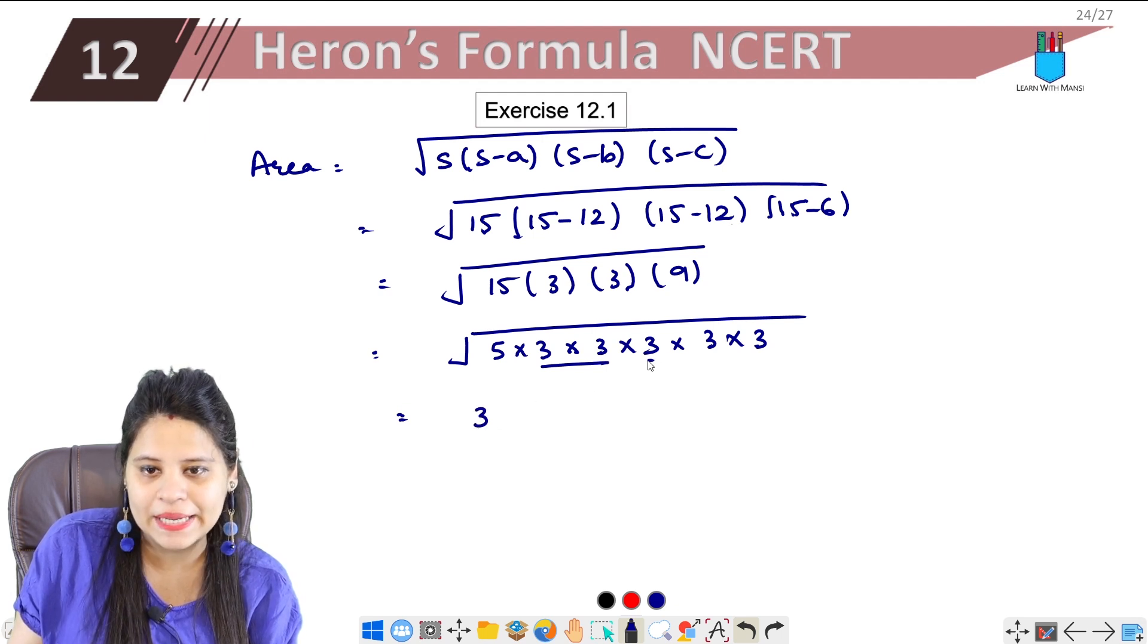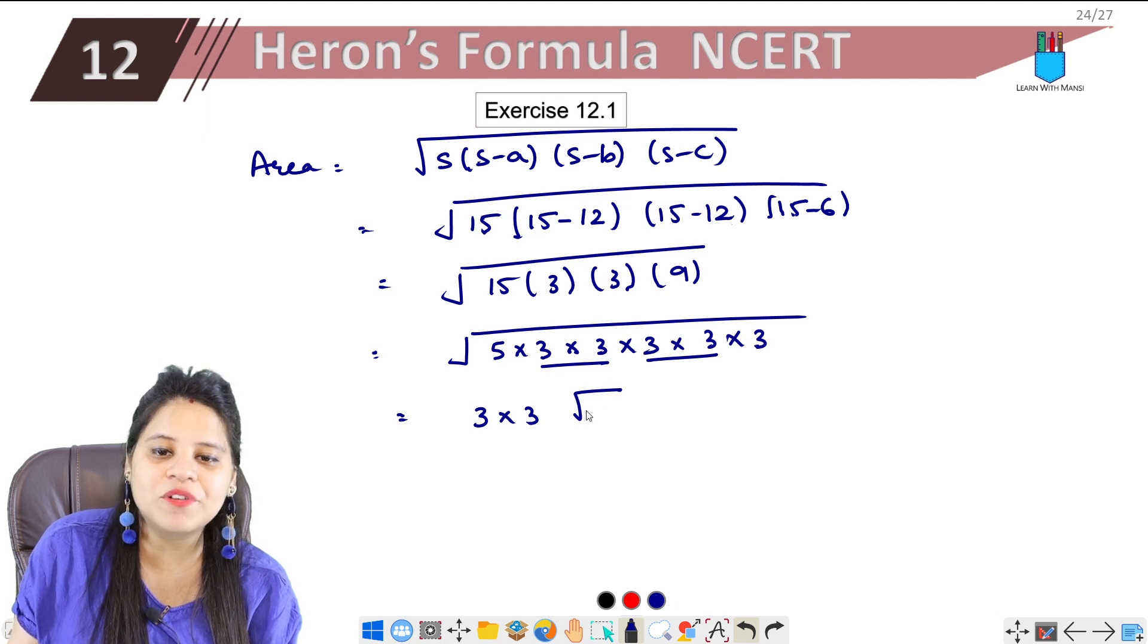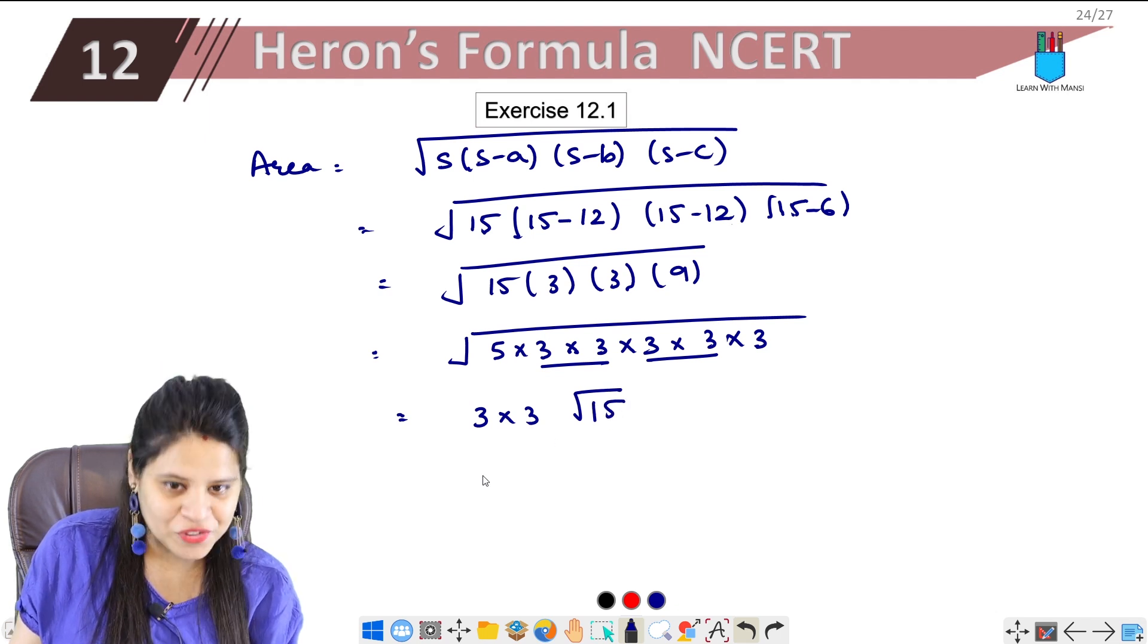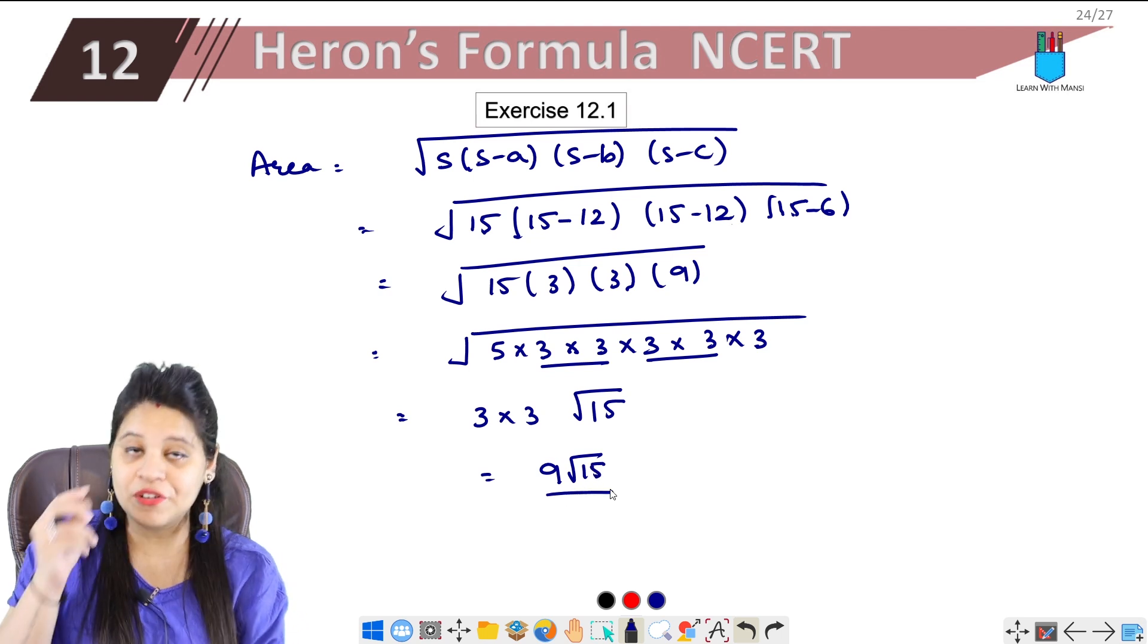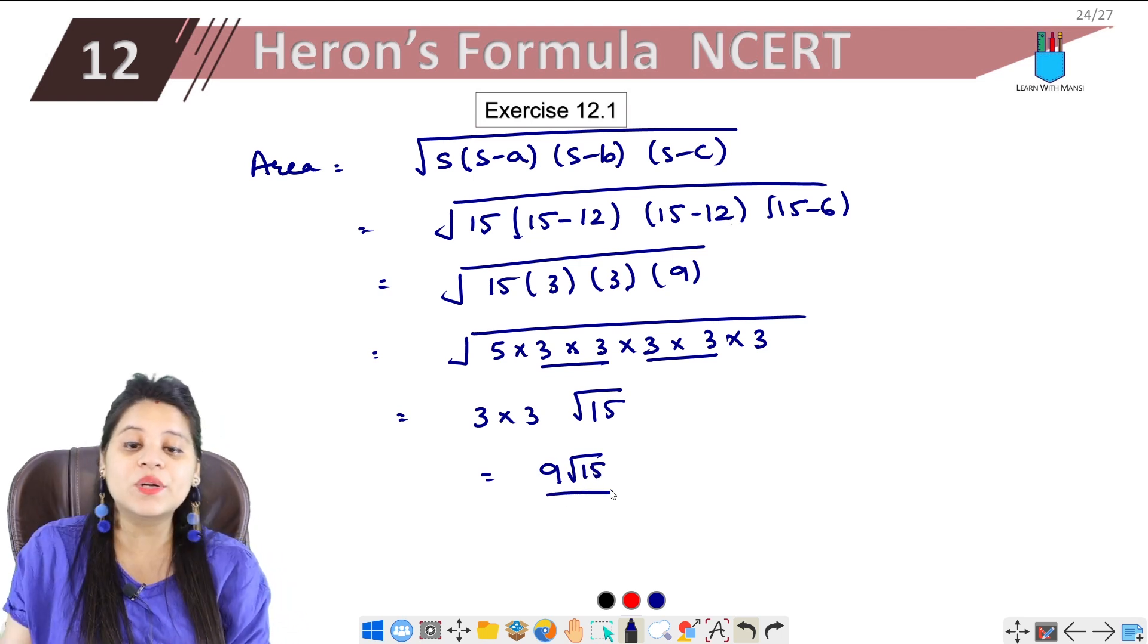Now see how many pairs are made. 3 made a pair, remove it from outside. Again 3 made a pair, remove it from outside. 5 and 3 are left, which is 15. So we get 3 times 3 is 9 under root 15.